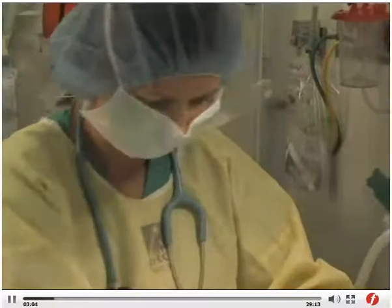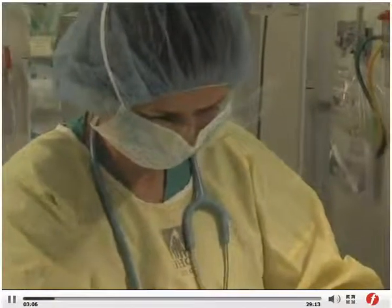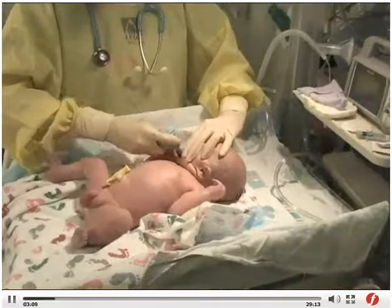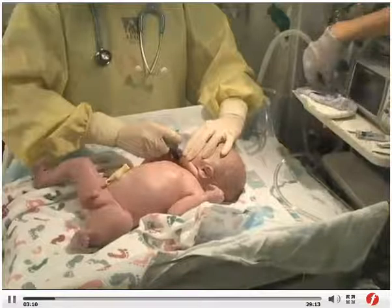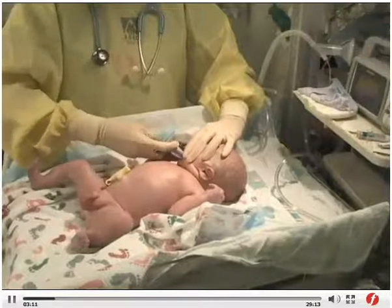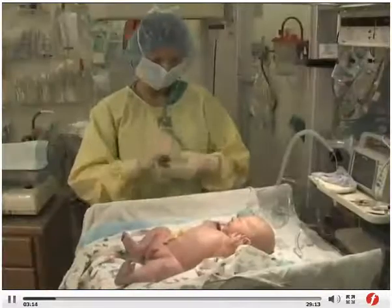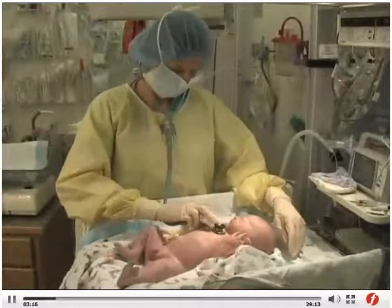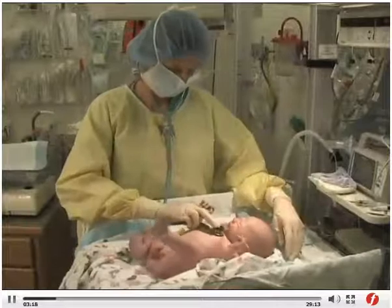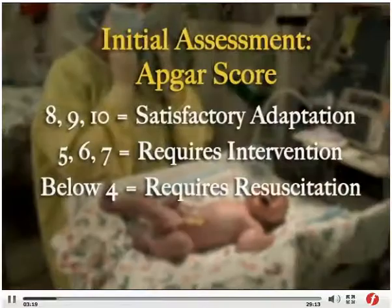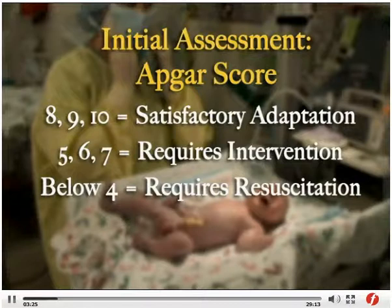Because non-Caucasian infants may appear ashen or gray, observe the mucous membranes of the lips, mouth and tongue for central cyanosis. At five minutes, reassess the infant on all five APGAR points again. Total all five components of the assessment. A score of eight, nine or ten indicates satisfactory cardiopulmonary adaptation and requires no specific intervention.